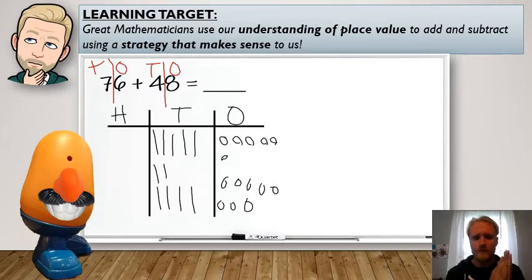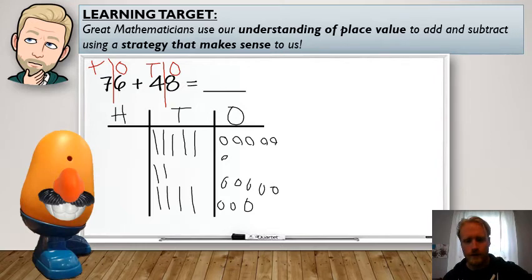All right. So I've represented both numbers. So we're ready to add them up together, right? Okay. So which place value do I start in? You got it. Always starting in the ones place. So let's count up my ones. You can count with me.